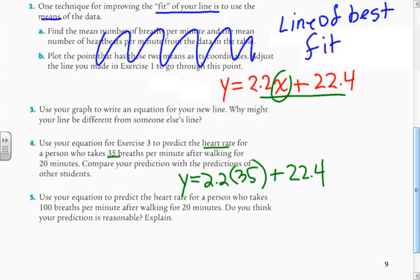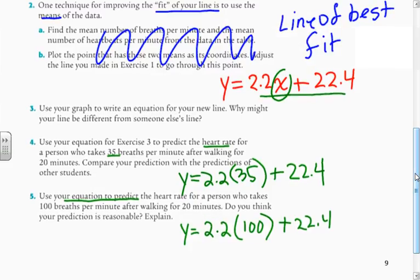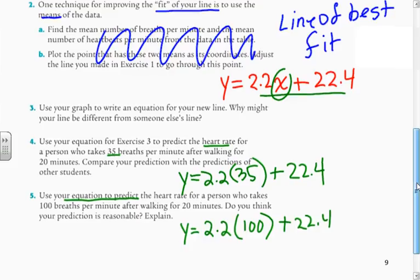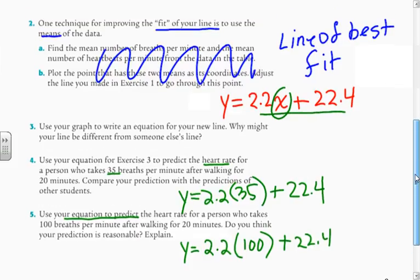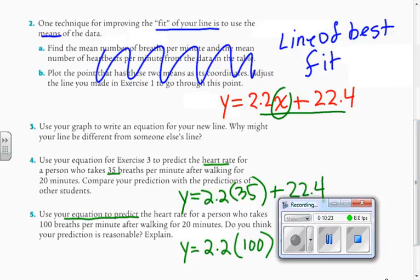And then the second one says, use your equation to predict the heart rate for a person who takes 100 breaths per minute. And to find that out, I would just take 2.2 times 100 plus 22.4. And that equation, the calculator generated by averaging all the data. So that's why it's called the line of best fit. It isn't just a guess by me. It's actually a mathematical algorithm taking care of that for you. We'll talk about this more in class and show you how to do that. There we go.